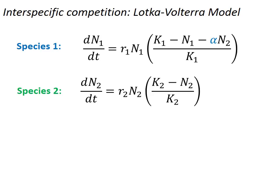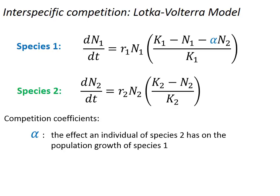In order to account for the effects of competition, we are going to add one additional variable to each of these equations, and we refer to this variable as the competition coefficient. For species 1, this coefficient is represented by alpha, which is the effect an individual of species 2 has on the population growth of species 1.